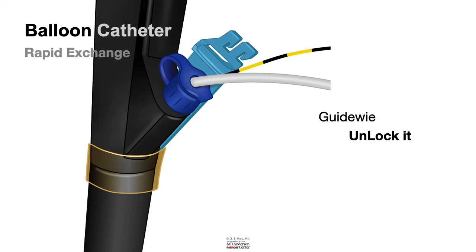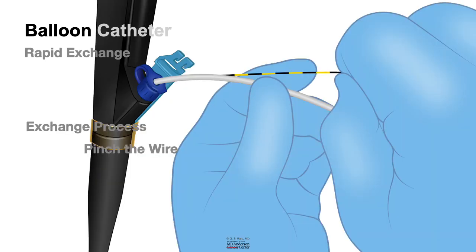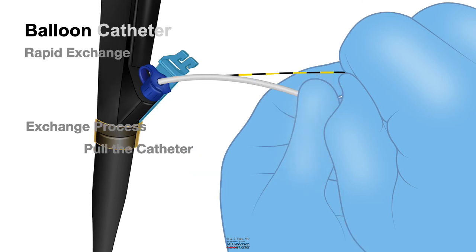When it comes to short exchange procedure, it is very simple. You hold the guide wire with your right hand, pinch the wire, and pull the catheter with your left hand.